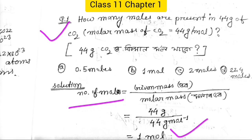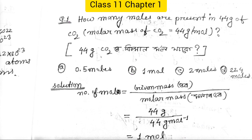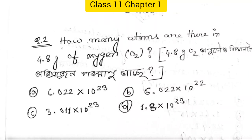So this is the question: How many atoms are in 4.8 grams of oxygen?